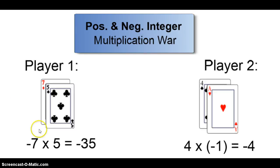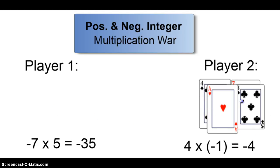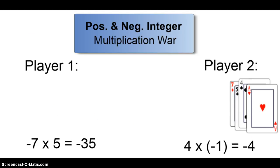So when it comes time to play Multiplication War, I flip up two cards here. Player one, negative seven times five is negative thirty-five. Player two says four times a negative one is negative four. And negative four is greater than negative thirty-five, so player two wins and keeps all four cards.